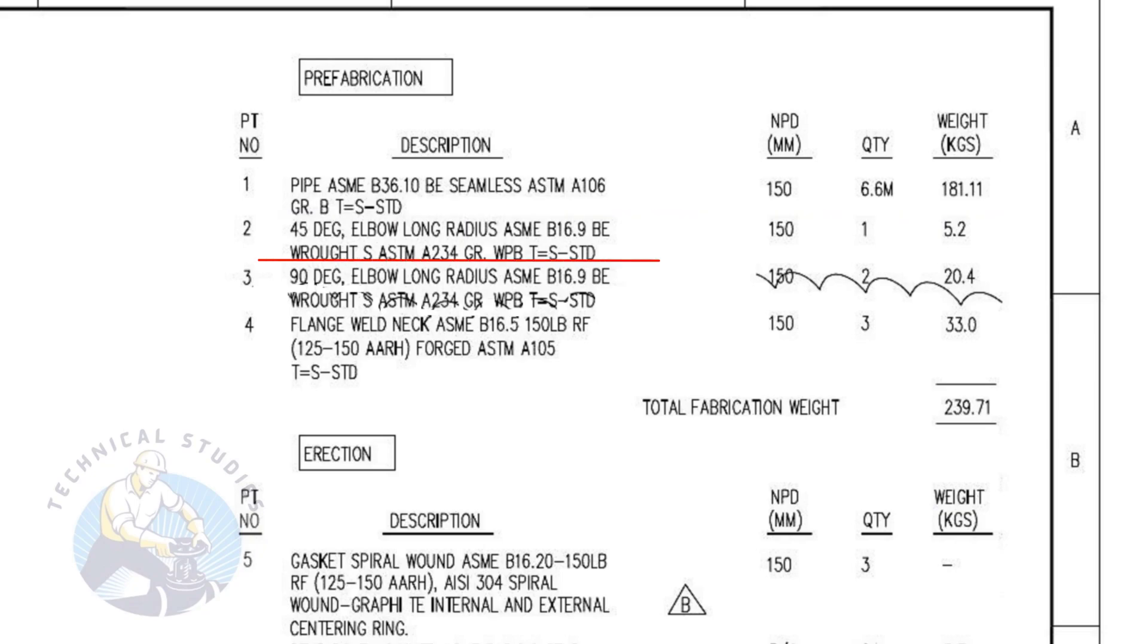Item number two is a standard schedule, 45 degree long radius elbow with bevel ends. The nominal pipe diameter is 150. The quantity is one number.